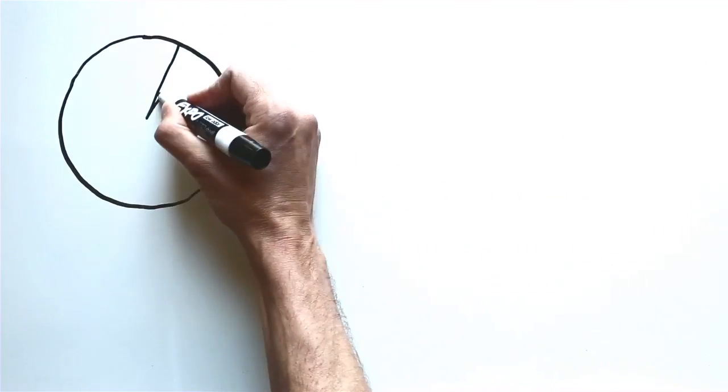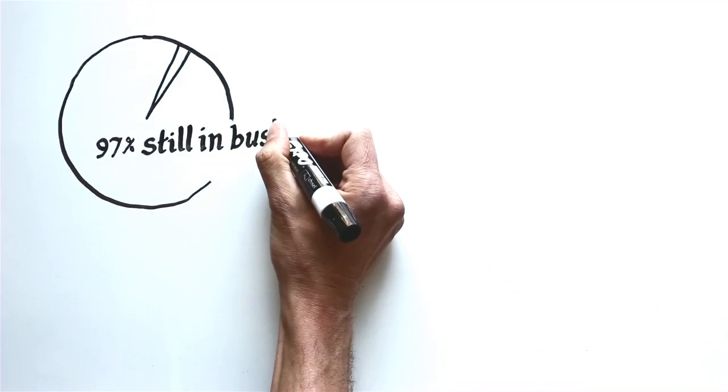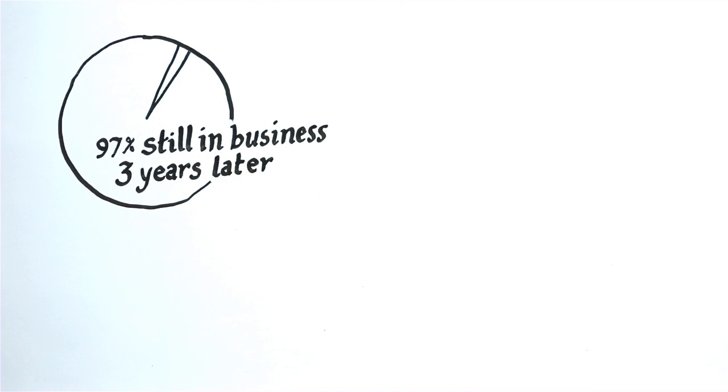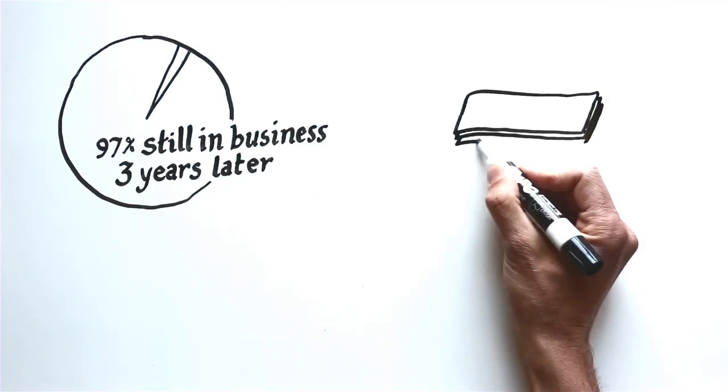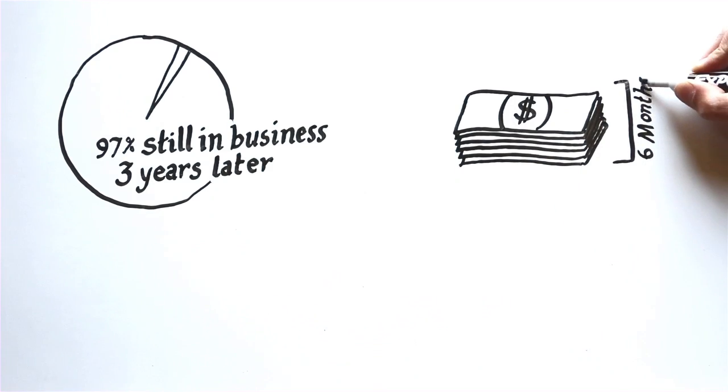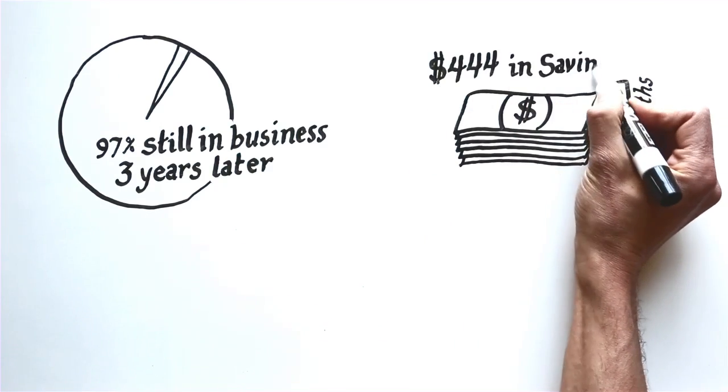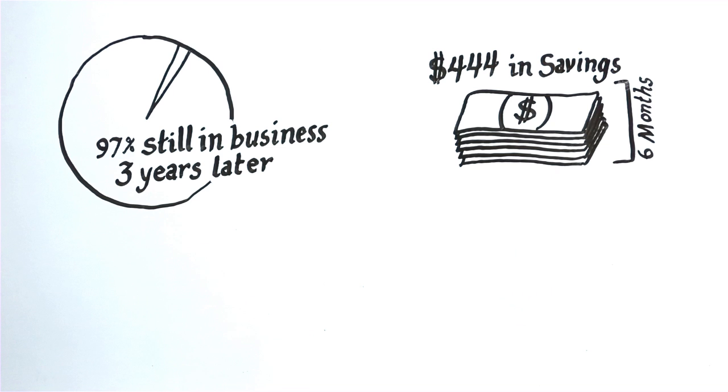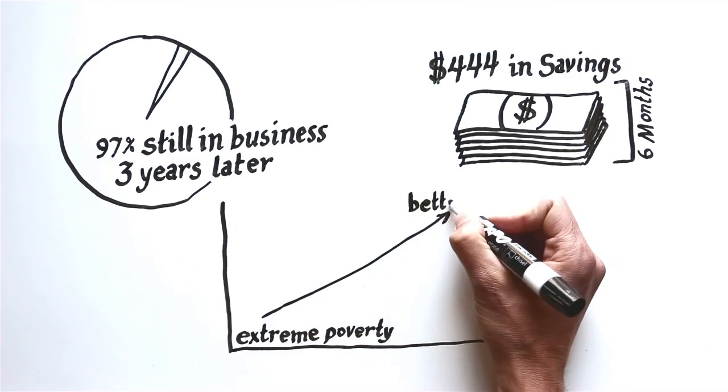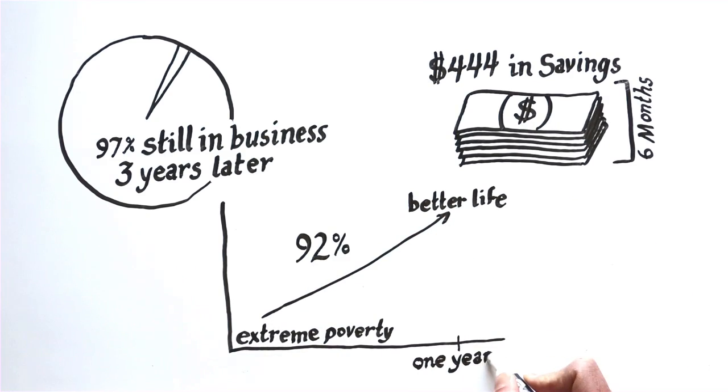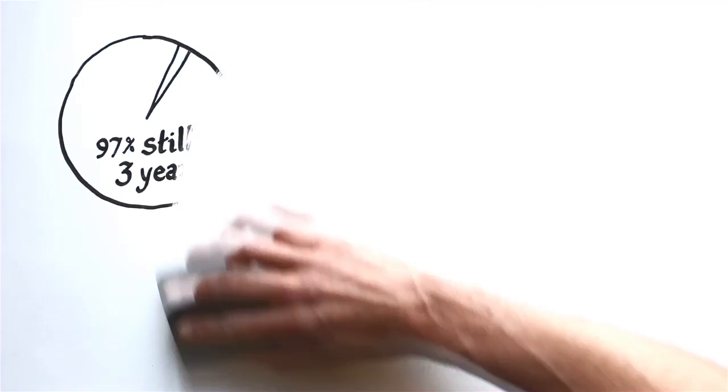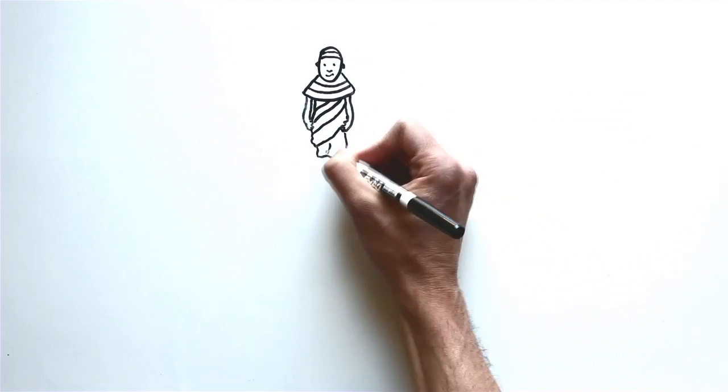REAP works! After three years, 97% of businesses are still operating. In the first six months, an average savings group has put away $444 to protect them in times of drought or emergency. 92% of women graduate out of extreme poverty within one year. Our impact is exponential.